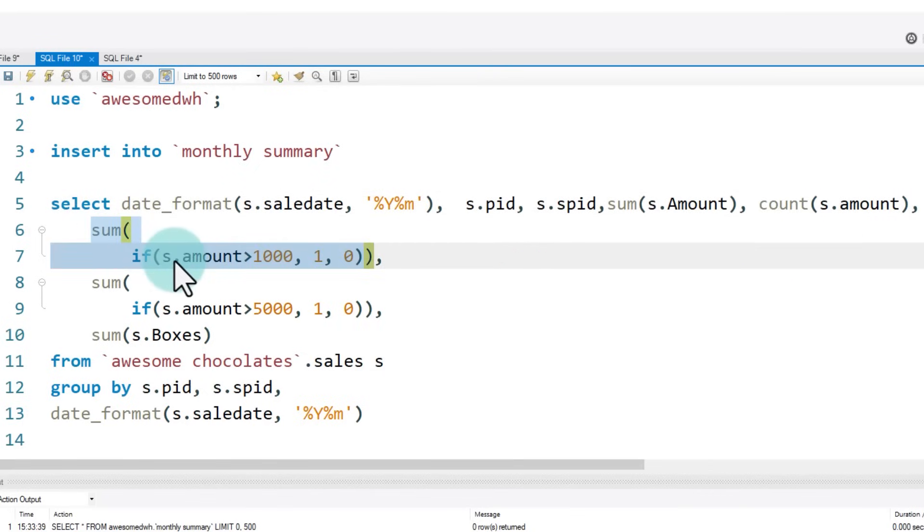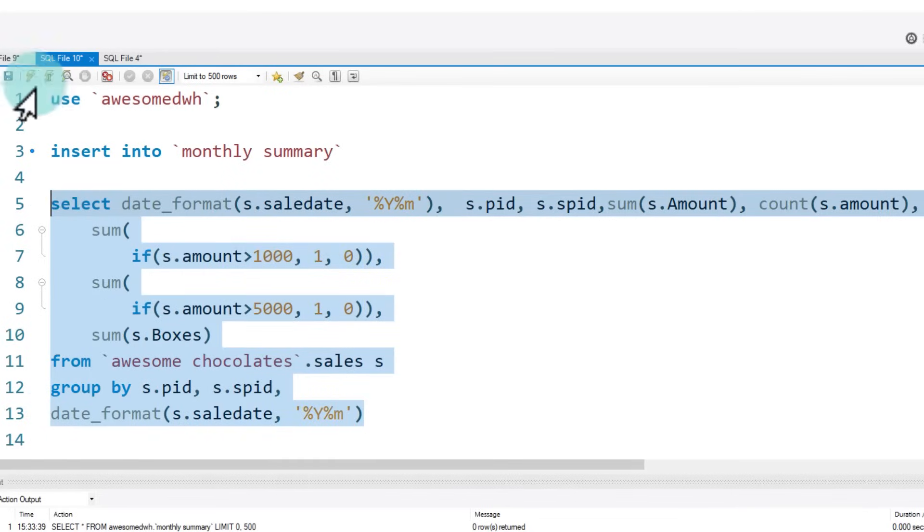And then sum of where the amount is greater than 1000. I am generating either one or zero and then summing that column. Likewise, another sum where the amount is greater than 5000. And then finally boxes total as well. All of this from my main Awesome Chocolates database sales table. And then I have put an alias for that as S. And here I'm grouping this with PID, SPID and then finally the date format option as well.